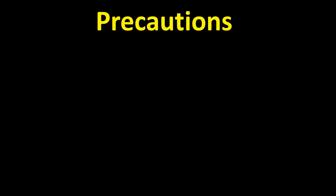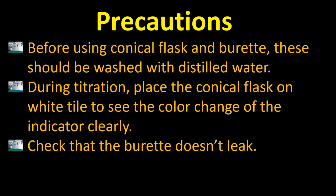What are the precautionary measures to take before or during the experiment? First, before using the conical flask and burette, these should be washed with distilled water. Second, during titration, place the conical flask on a white tile to see the color change of the indicator clearly — the white background makes the color change easily prominent. Third, check that the burette doesn't leak.